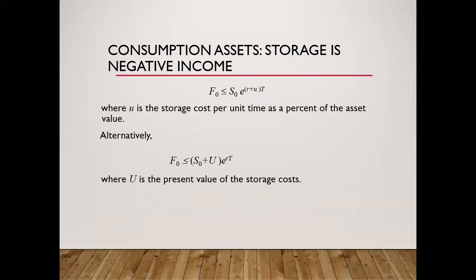Storage costs are a different approach — storage is negative income, it's a cost we have. We treat it like the income adjustments but the sign goes the other way. Instead of saying minus Q, we say plus little u for storage cost as a percentage. Instead of saying minus I, we say plus capital U if it's a fixed dollar amount — like renting a tanker sitting off the coast of Houston. If a storage company gives you a percentage, you'd use the exponential form.